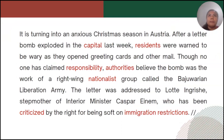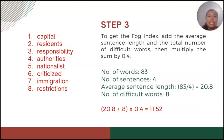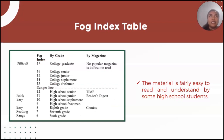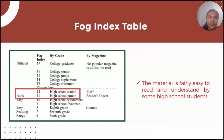Going back to our sample passage, all the difficult words — words with three syllables or more — are written in red. We have a list of eight difficult words. For Gunning Fog Index Step 3, we add the average sentence length and the total number of difficult words, then multiply the sum by 0.4. So we have 20.8 plus 8, multiplied by 0.4, which gives us an index of 11.52. According to the Fog Index table, 11.52 falls under fairly easy to understand by high school senior and junior students. Therefore, this passage is fairly easy to read and understand by some high school students.